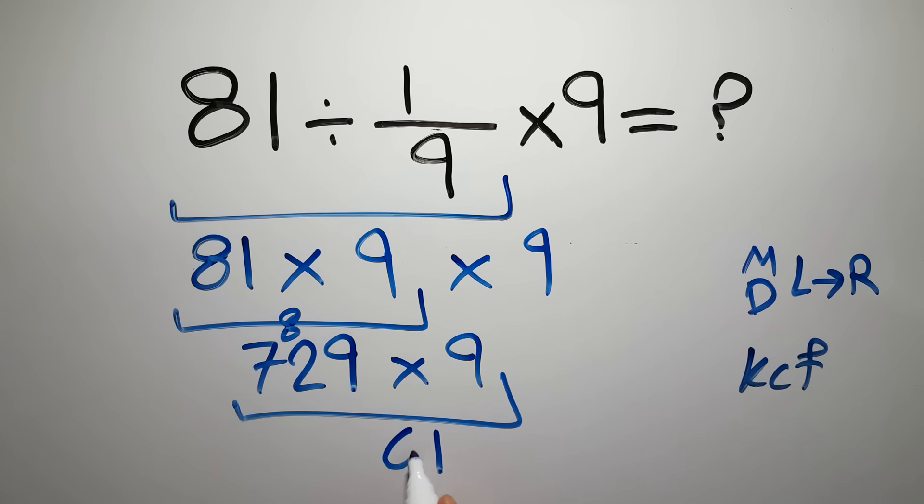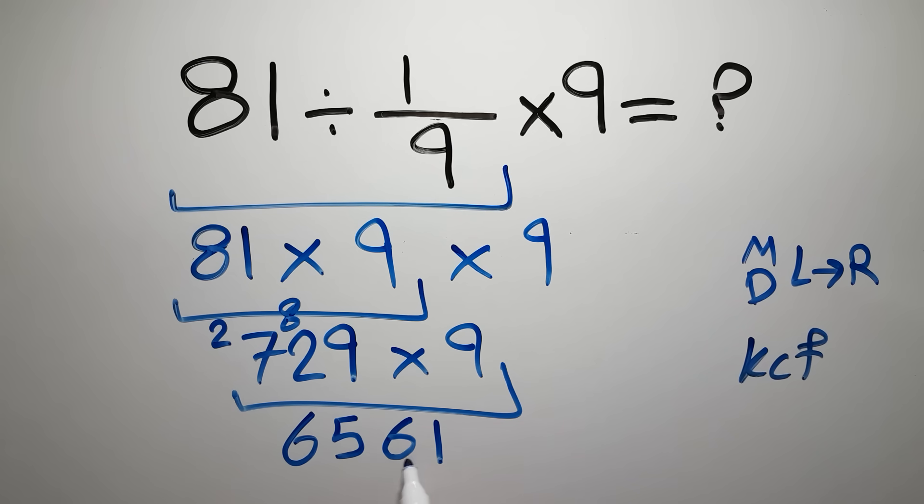We write 6 here and carry 2 here. 9 times 7 gives us 63, so 63 plus 2 gives us 65. And this is our final answer to this problem: 6561.